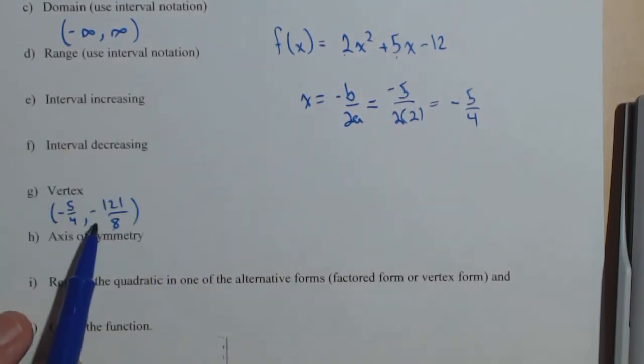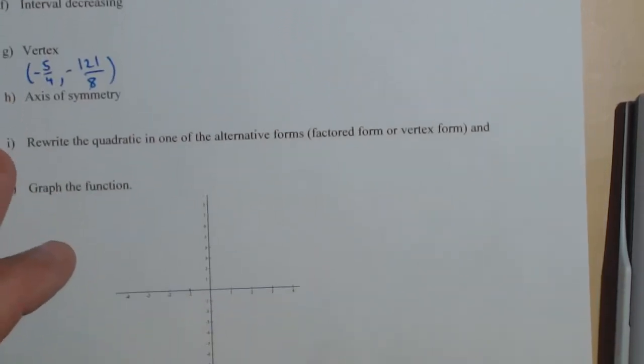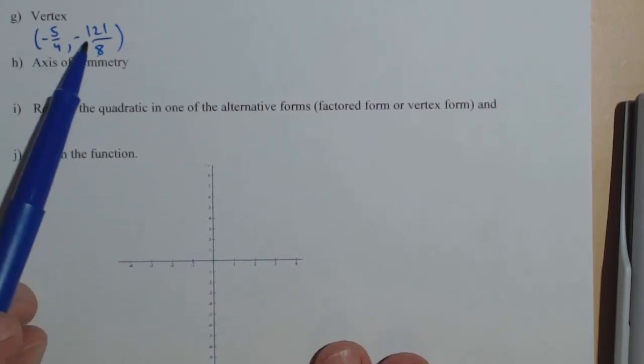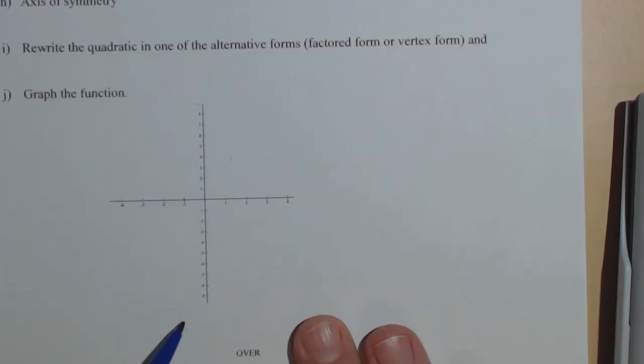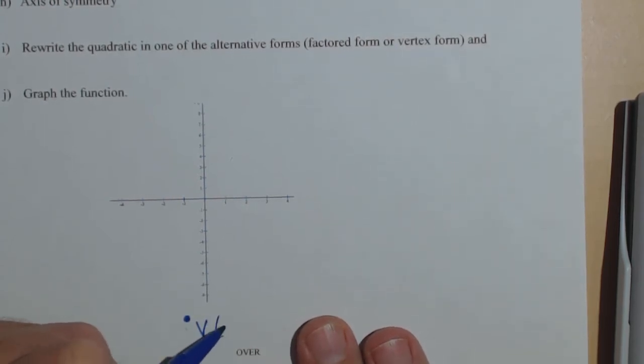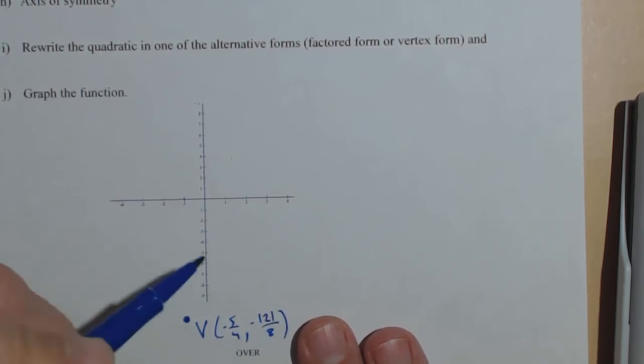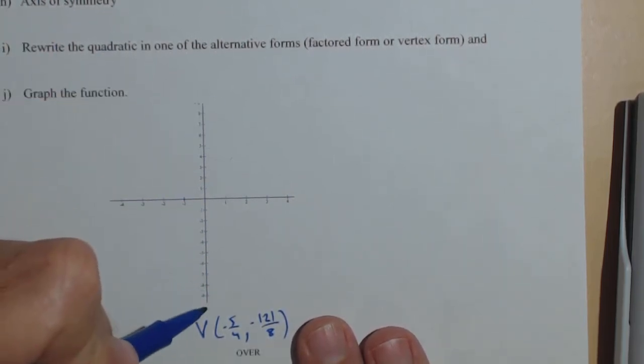So it goes from the vertex up. So if I were to graph it, I would graph this vertex, which is right around negative 1 and right around negative 15. So unfortunately it doesn't quite fit on our axes here. But let's put it right there. There's our vertex. Vertex is negative 5 fourths, comma, negative 121 over 8. We had a y-intercept of negative 12. Again, it doesn't quite fit, but it's going to be right about there. And then these things are symmetric.